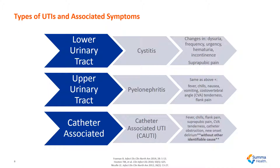It's important to differentiate the type of urinary tract infection and associated symptoms. For the lower urinary tract infection, this is called cystitis. Symptoms include dysuria or pain on urination, frequency, urgency or the need to urinate, hematuria or blood in the urine, as well as incontinence. Patients can also have suprapubic pain.